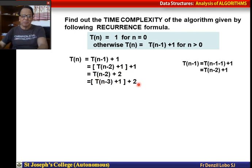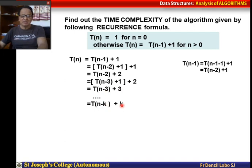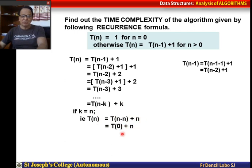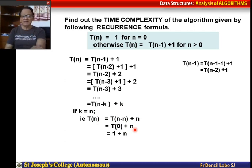Continuing, it becomes T(n-3) + 3, and so on. In general, it becomes T(n-k) + k. When k = n, this becomes T(n-n) + n = T(0) + n. Since T(0) = 1 when n = 0, T(n) simplifies to 1 + n.